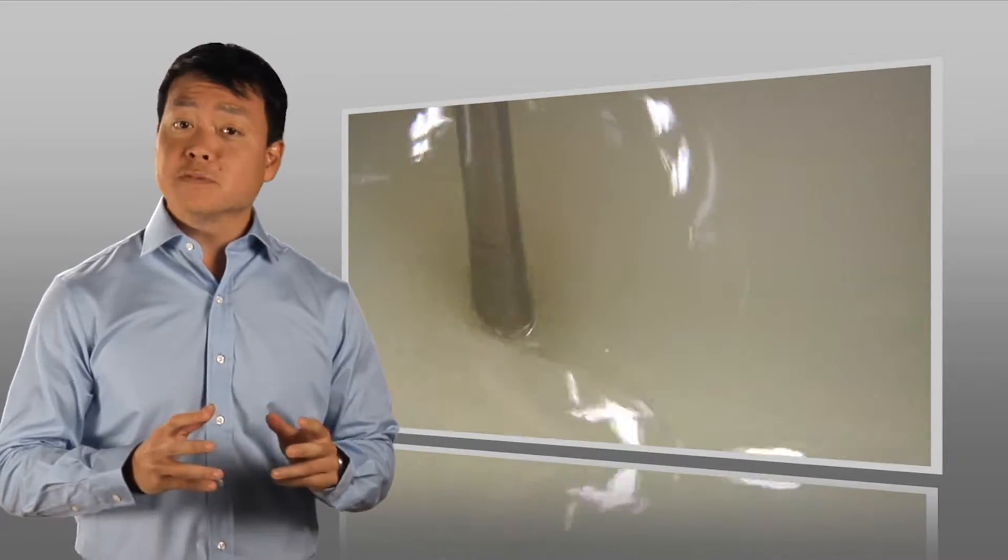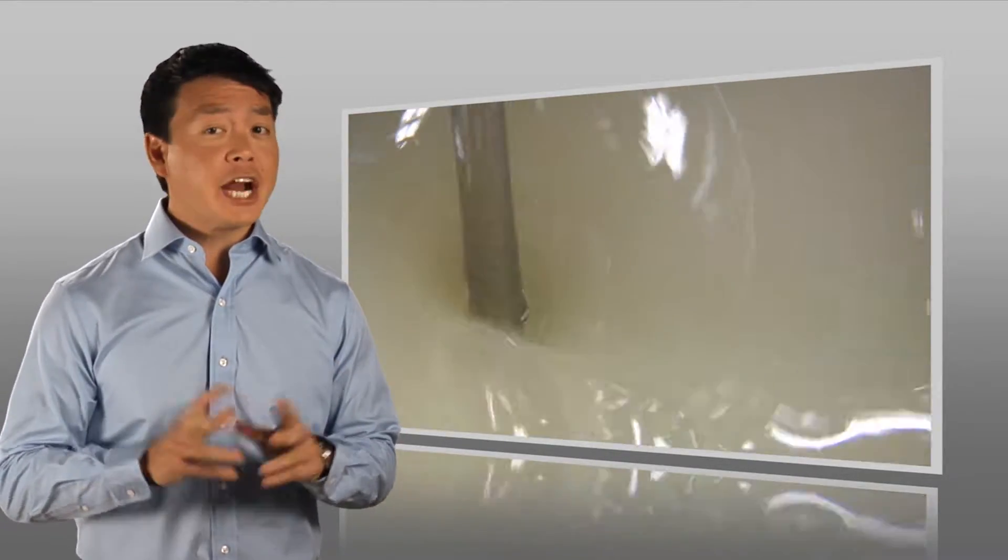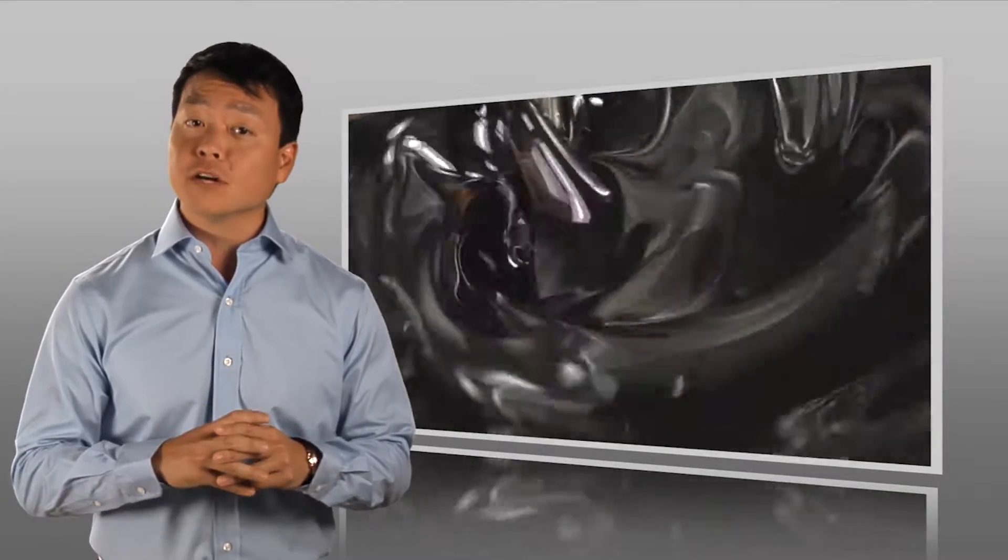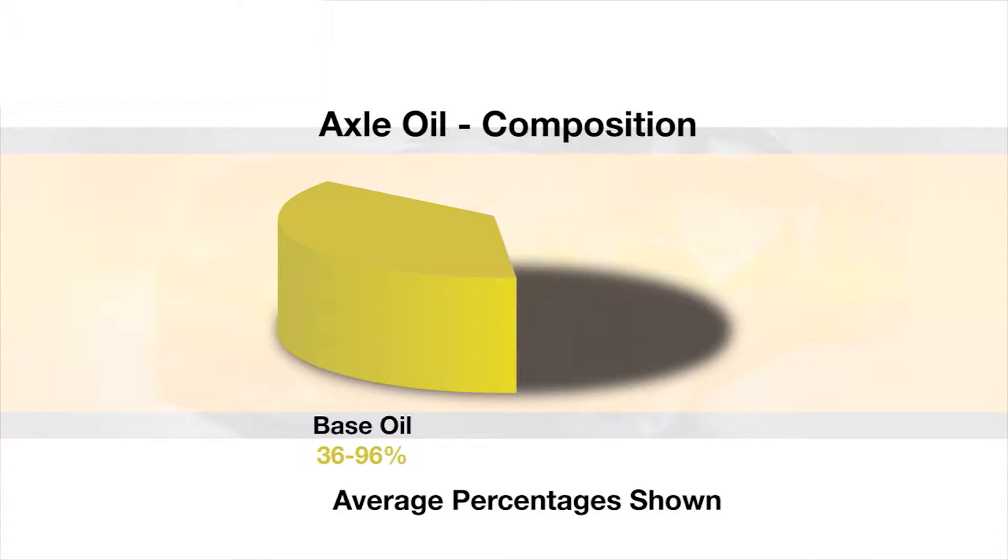Axle oils consist of a precise blend of chemical components, each carefully selected to create the desired quality and performance in the final oil. The base oil is the main component, ranging from 36 to 96 percent of the gear oil.